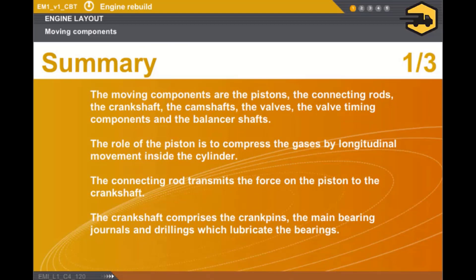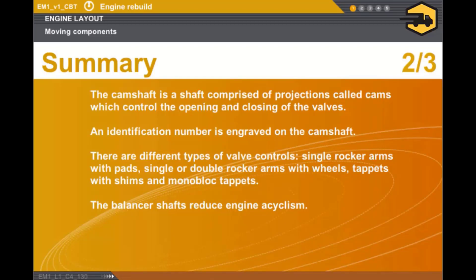In this section we covered the following points. The moving components are the pistons, the connecting rods, the crankshaft, the camshafts, the valves, the valve timing components and the balancer shafts. The role of the piston is to compress the gases by longitudinal movement inside the cylinder. The connecting rod transmits the force on the piston to the crankshaft. The crankshaft comprises the crank pins, the main bearing journals and drillings which lubricate the bearings. The camshaft is a shaft comprised of projections called cams which control the opening and closing of the valves. An identification number is engraved on the camshaft. There are different types of valve controls: single rocker arms with pads, single or double rocker arms with wheels, tappets with shims and monoblock tappets. The balancer shafts reduce engine acyclism.